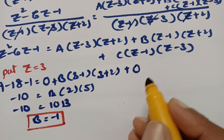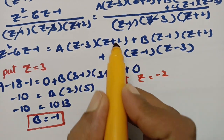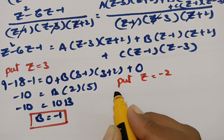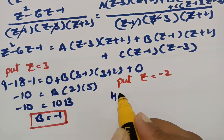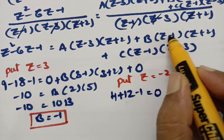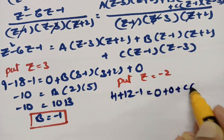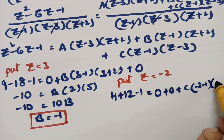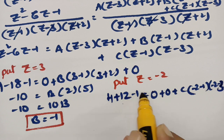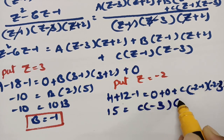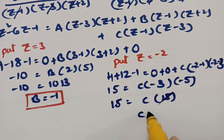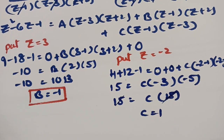Now put z = −2. The A and B terms vanish, leaving (−2)² − 6(−2) − 1 = C(−2−1)(−2−3), so 4 + 12 − 1 = 15 = C(−3)(−5) = 15C. Therefore C = 1.